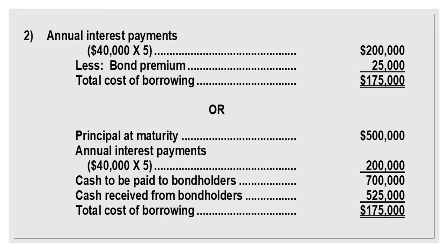The total cost of borrowing equals annual interest payments $40,000 times five years = $200,000, minus bond premium $25,000, so total cost of borrowing = $175,000. Alternatively: principal at maturity $500,000 plus annual interest payments $200,000 = $700,000 cash paid to bondholders, less cash received $525,000, giving total cost of borrowing $175,000. You can use either method.